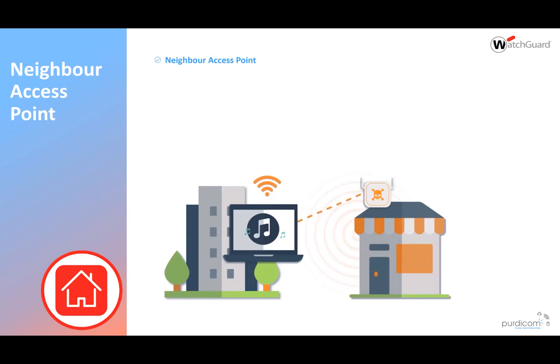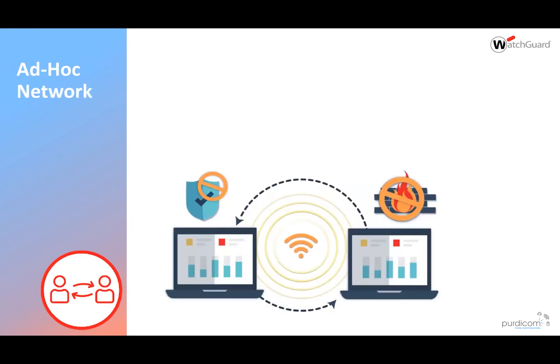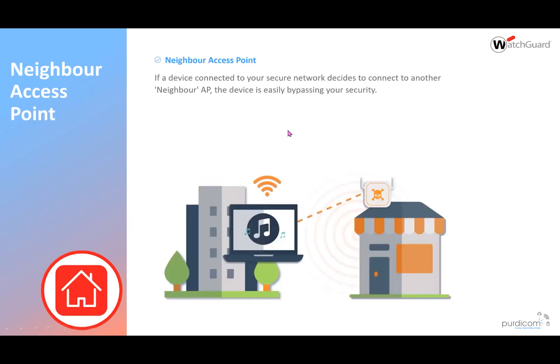Neighbourhood access points are probably the biggest pain people have. For example, if you're in a large environment with a Starbucks next door, you want to keep employees on your Wi-Fi and stop them connecting to free Wi-Fi nearby — to maintain GDPR compliance and stop them leaking commercial data to personal accounts. You can't ask Starbucks to turn down their Wi-Fi, but with our system we can make sure all your authorized devices only stay on your network.